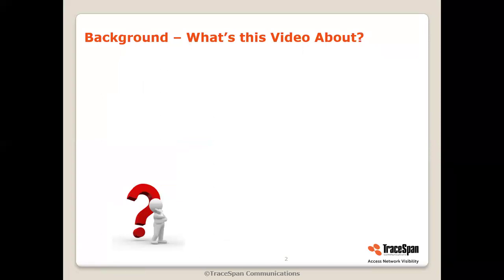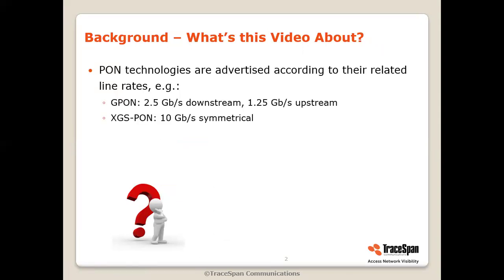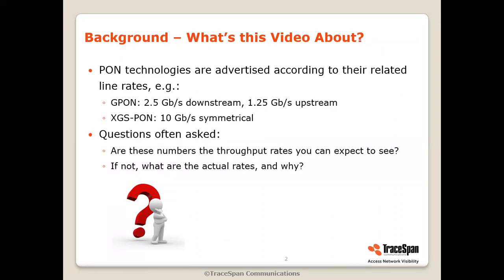So what's this video about? PON technologies are often advertised according to their related line rates. As an example, GPON is 2.5 gigabit downstream, 1.25 upstream. XGS-PON is 10 gigabit per second symmetrical, both upstream and downstream. So people often ask: are these numbers the throughput rates that you should expect to see? In other words, do I expect to be able to deliver 10 gigabit per second throughput on XGS-PON? If not, what are the actual rates and why?